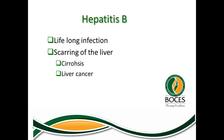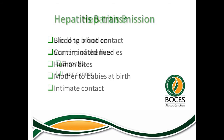Hepatitis B is a lifelong infection. It can cause scarring of the liver, which can lead to cirrhosis and potentially liver cancer. The modes of transmission include blood-to-blood contact, human bites, mother to babies at birth, and intimate contact with someone who has the illness.